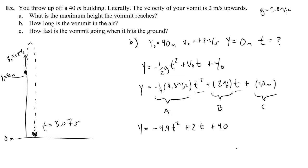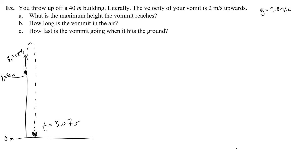Now that I know how long it takes to hit the ground, I can work on part c. Part c asks, how fast is the vomit going when it hits the ground? Well, to find that velocity, first I'm going to recognize that that velocity is negative. Definitely going to be negative because it's going down, and it's going to be bigger than 2 meters per second. So some negative number that's bigger than 2.